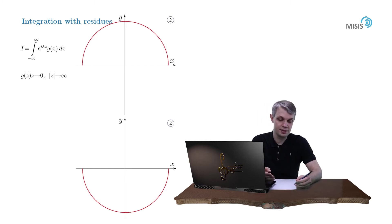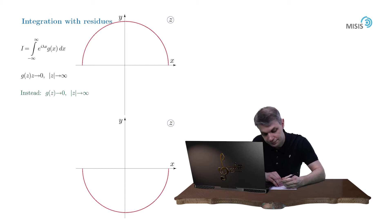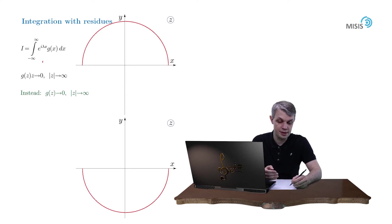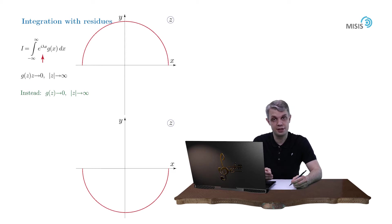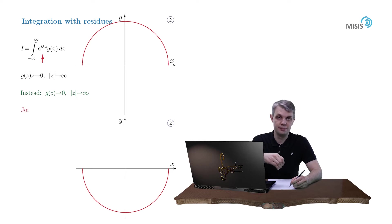But in reality, this condition can be relaxed and substituted with the condition of g of z simply tending to zero as the modulus of z tends to infinity. In fact, the condition is slightly more subtle, but we will return to this in a minute. This relaxation is possible due to the presence of the exponential function in our integrand. Indeed, the exponential function is suppressed for positive lambdas if we go upward in the complex semiplane, and for negative lambdas if we move downward. So the precise statement is known as Jordan's Lemma.